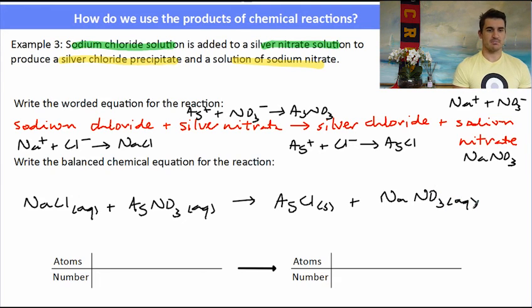Finally, we need to check if it's balanced. Looking at it, we've got one sodium, one sodium. One silver, one silver. A nitrate and a chloride. It's balanced. We're good to go.